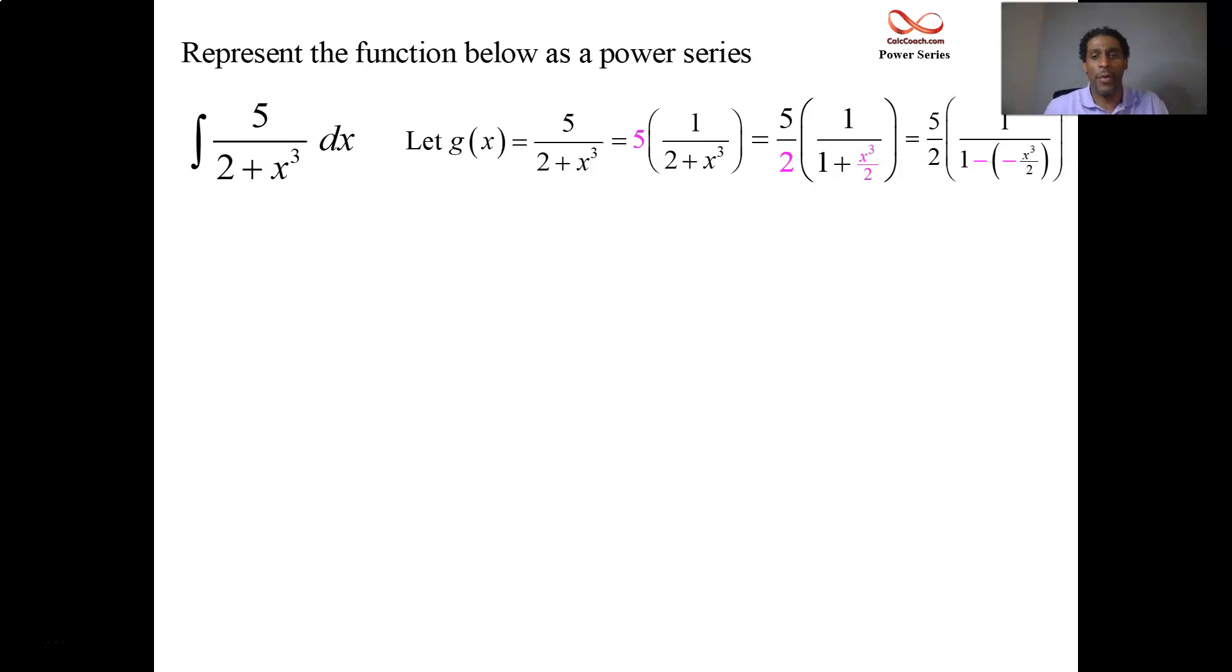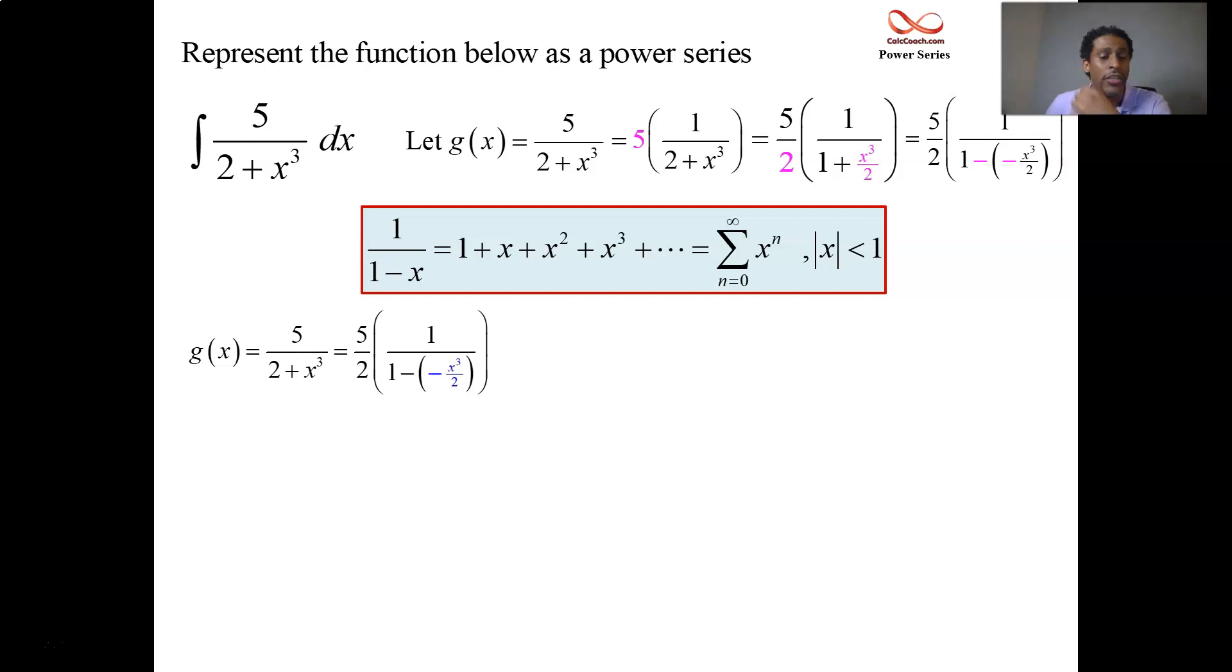We write it like this on purpose because in our first series that we found the function that it represents, the geometric series, it has a certain format to it. 1 over 1 minus anything will be represented as a power series with that anything raised to the nth power. It will converge as long as that anything's absolute value is less than 1. So we can take all the x's out and put in x cubed over 2 negative. Whatever is after the minus in 1 over 1 minus block.